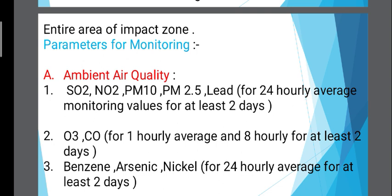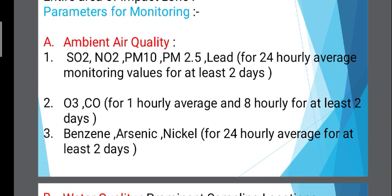The first parameter is ambient air quality. It includes SO2, NO2, particulate matter PM10, particulate matter PM2.5, lead, ozone, carbon monoxide, benzene, arsenic, and nickel. Their different concentrations in air quality affect overall air quality.